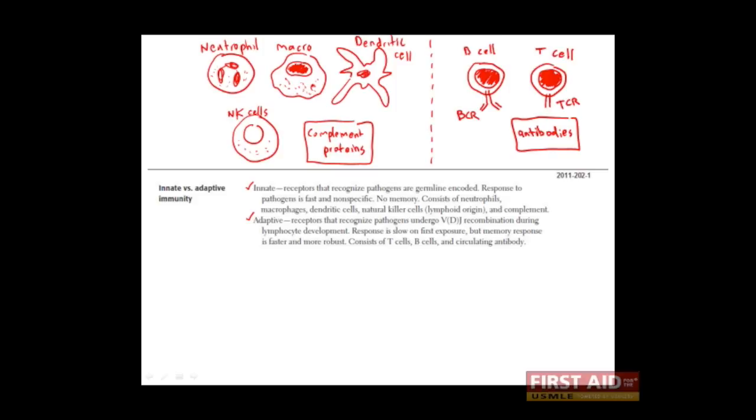The innate cells, on the other hand, have receptors over their surface which recognize broad and general patterns of a variety of pathogens. For example, the neutrophil, the macrophage, the dendritic cell, and even the NK cell has receptors over its surface that can recognize patterns which are common to all gram-negative bacteria. They have receptors which recognize patterns that are common to all gram-positive bacteria. They have other receptors that can recognize patterns in RNA viruses, patterns that are common in DNA viruses, and even patterns that are common among parasites.